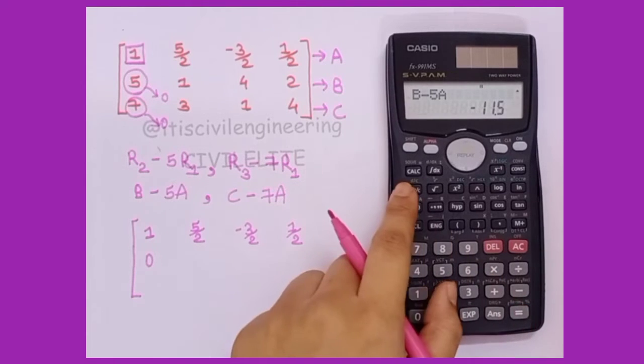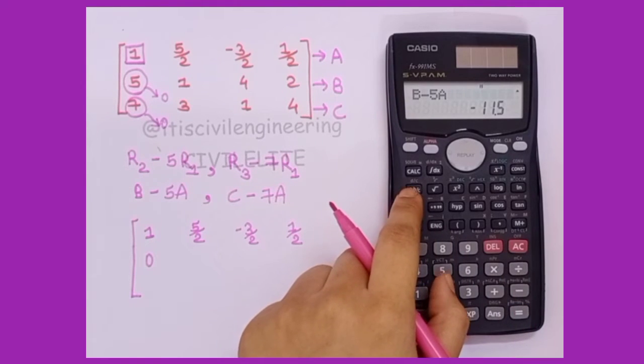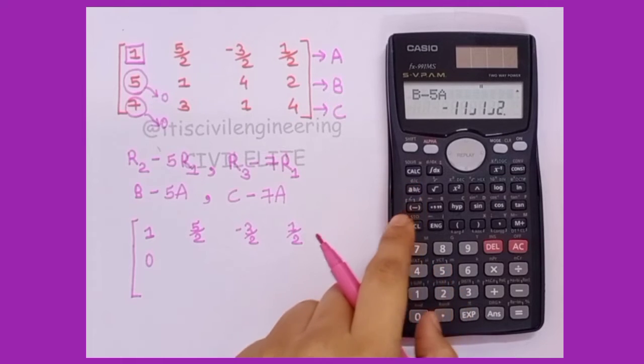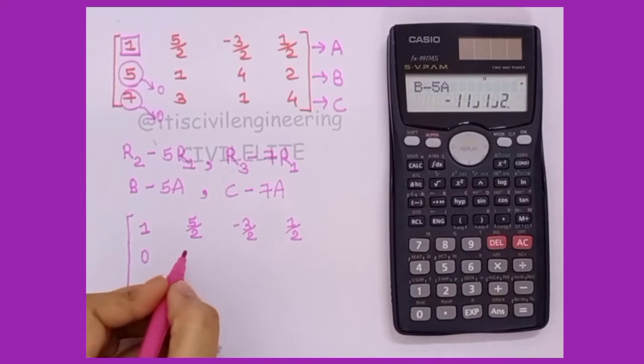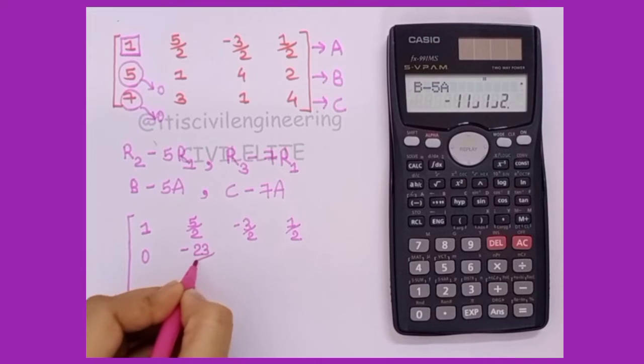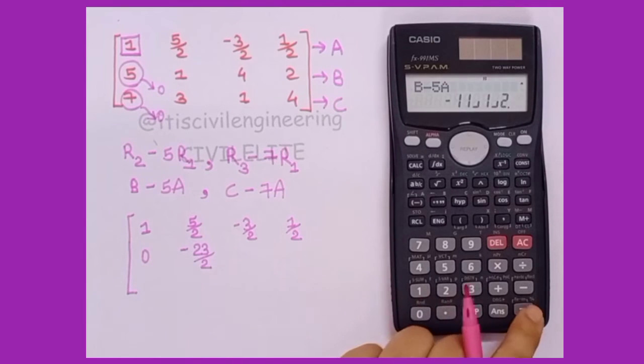We get minus 11.5. I'll just press this a b by c, so we get it in the integer form minus 11 integer 1 by 2, which is minus 23 by 2.